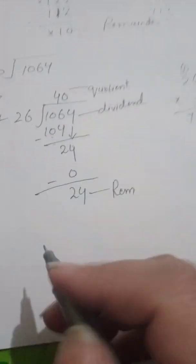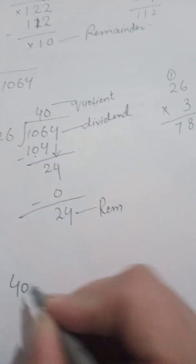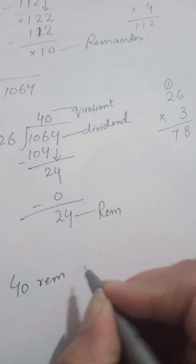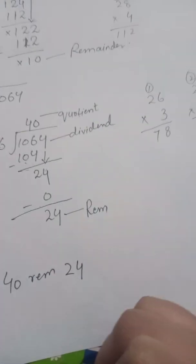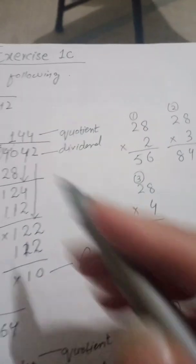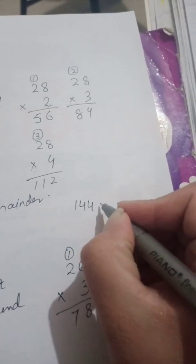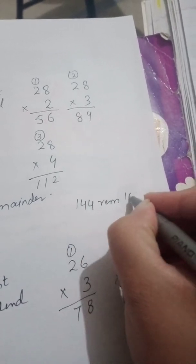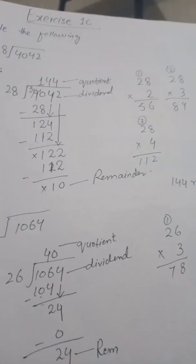Now let's see how to write the answers. For Part B, the answer is 40 remainder 24. For Part A, the answer is 144 remainder 10. You write your answers in this format.